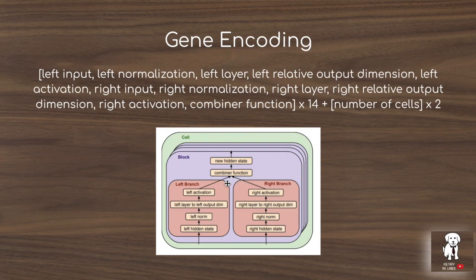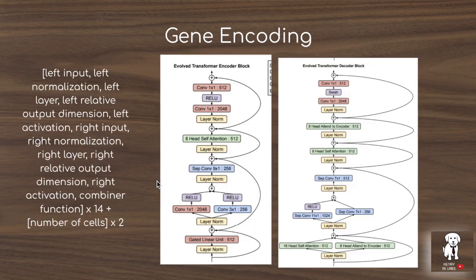The genetic code has six of these blocks for the encoder and eight blocks for the decoder, reflecting the transformer's encoder-decoder structure for sequence-to-sequence tasks. Additionally, the genetic code determines how many times to repeat the block, denoted as number of cells, with one value for the encoder and one value for the decoder. The genetic code produces encoder and decoder blocks, which are then stacked on top of each other to make up the overall transformer architecture.